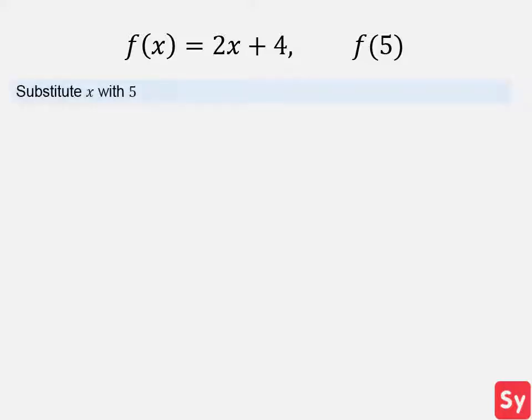First, we substitute our argument in for x. So we sub x with 5. Now let's simplify. We first multiply 2 and 5. Then, we add 10 and 4, and we get 14, which is our answer.